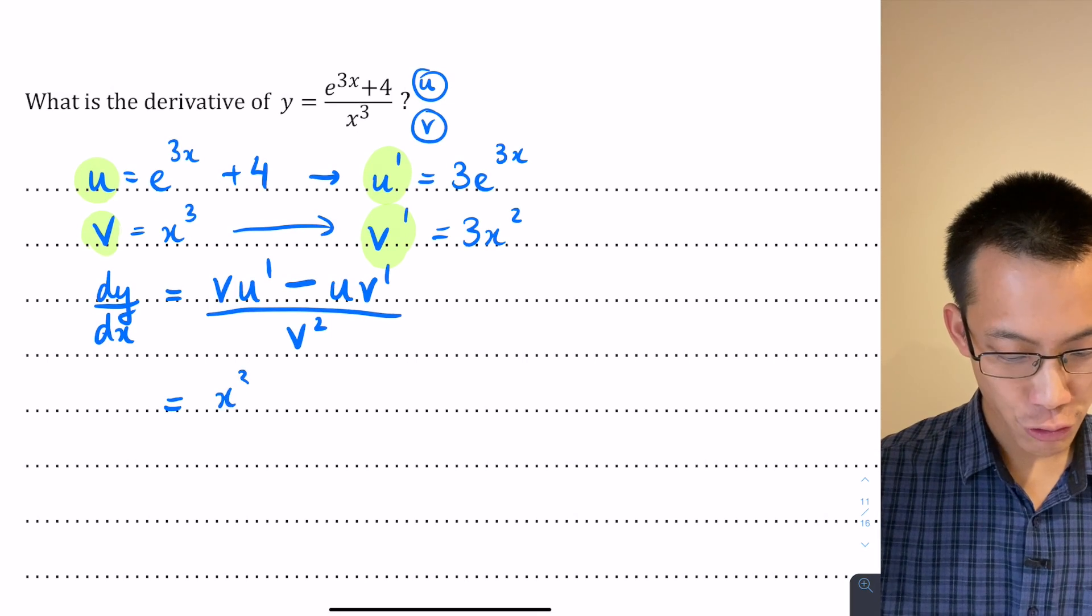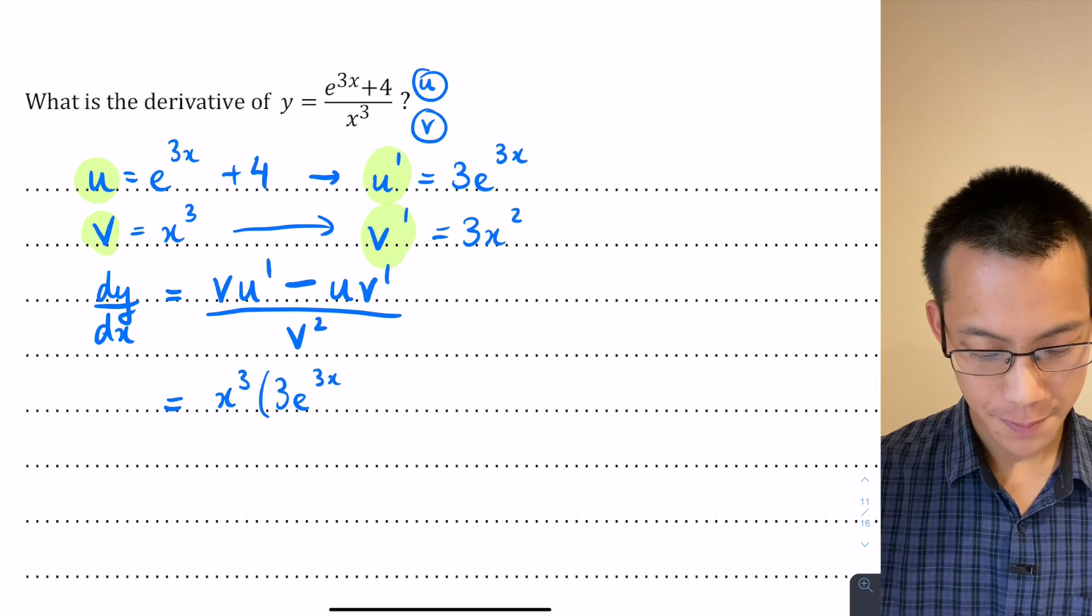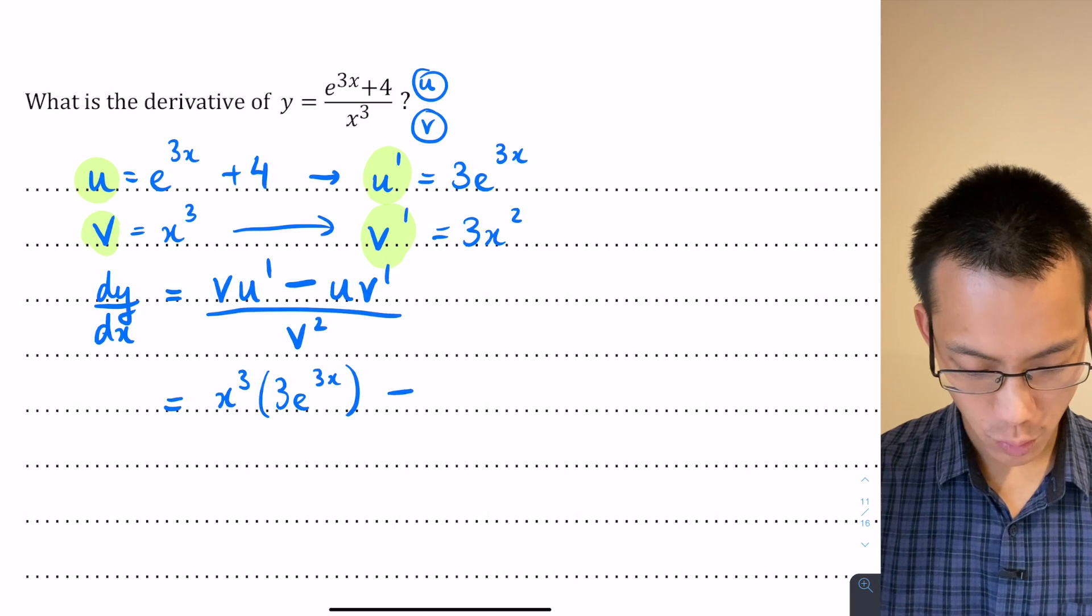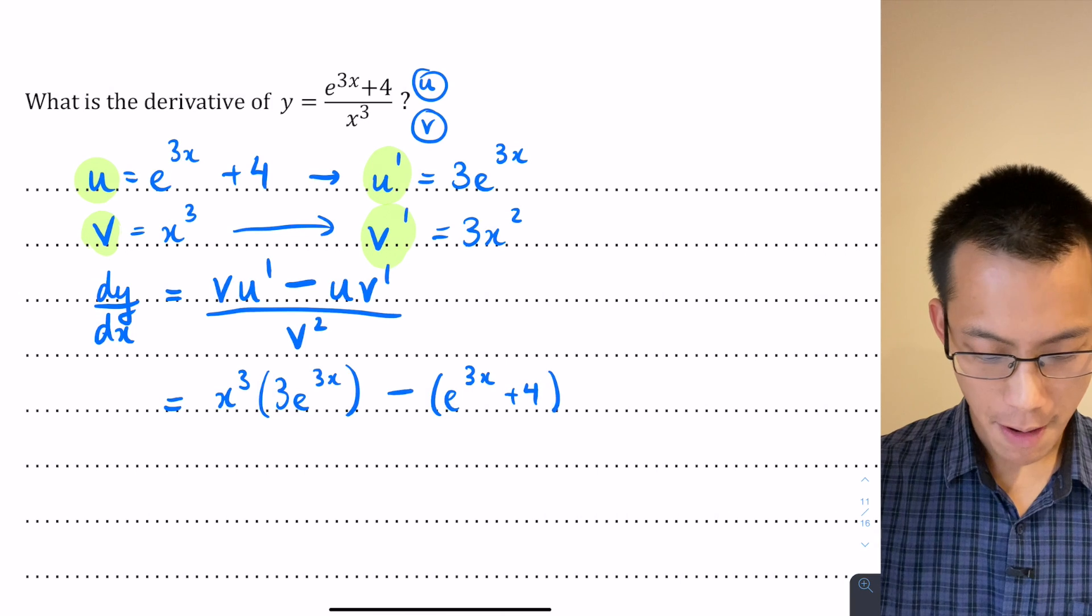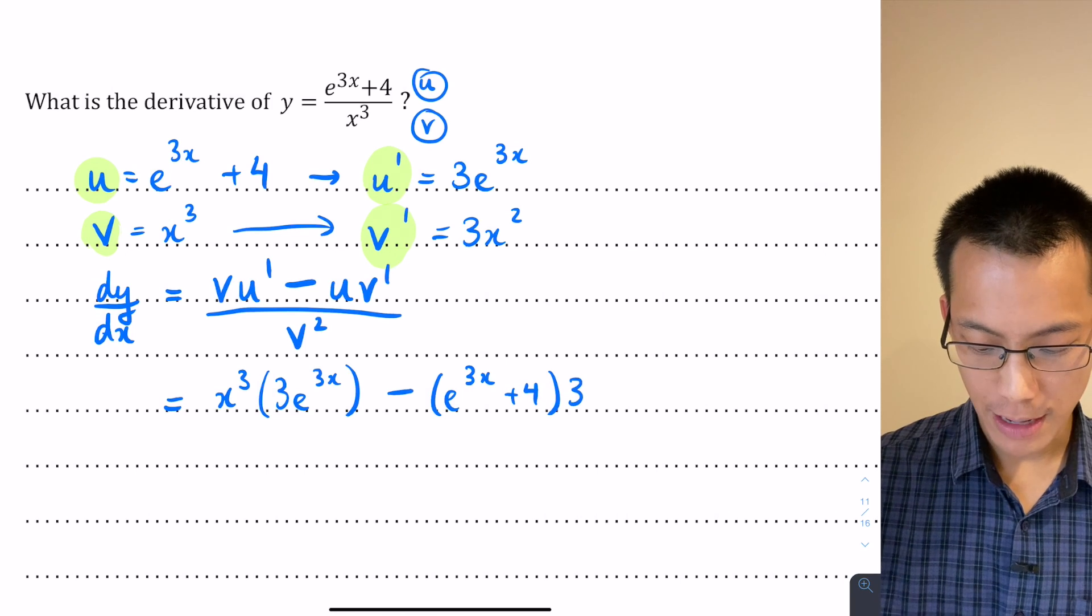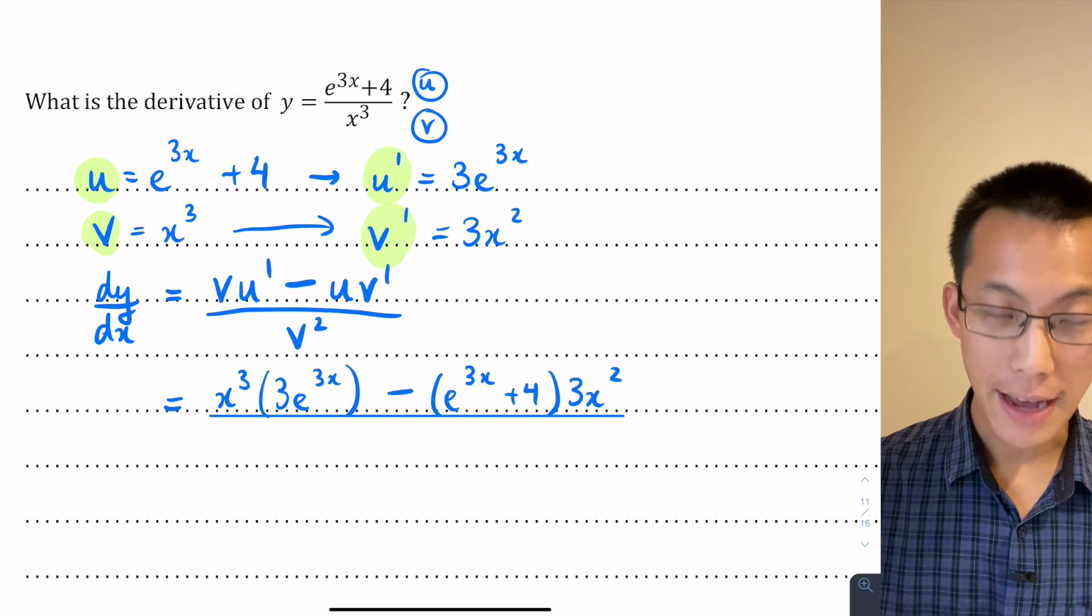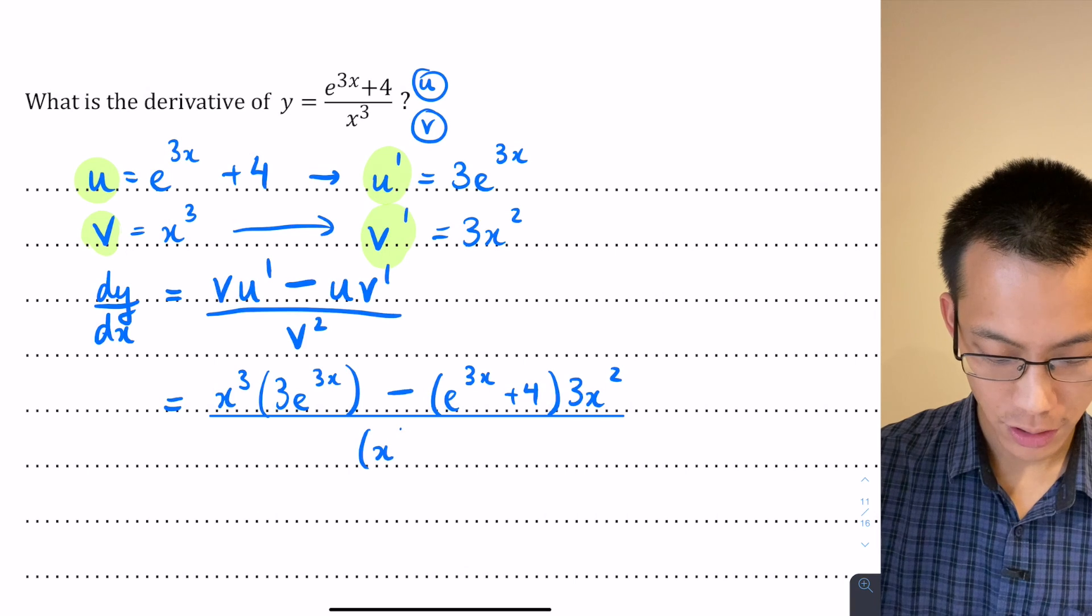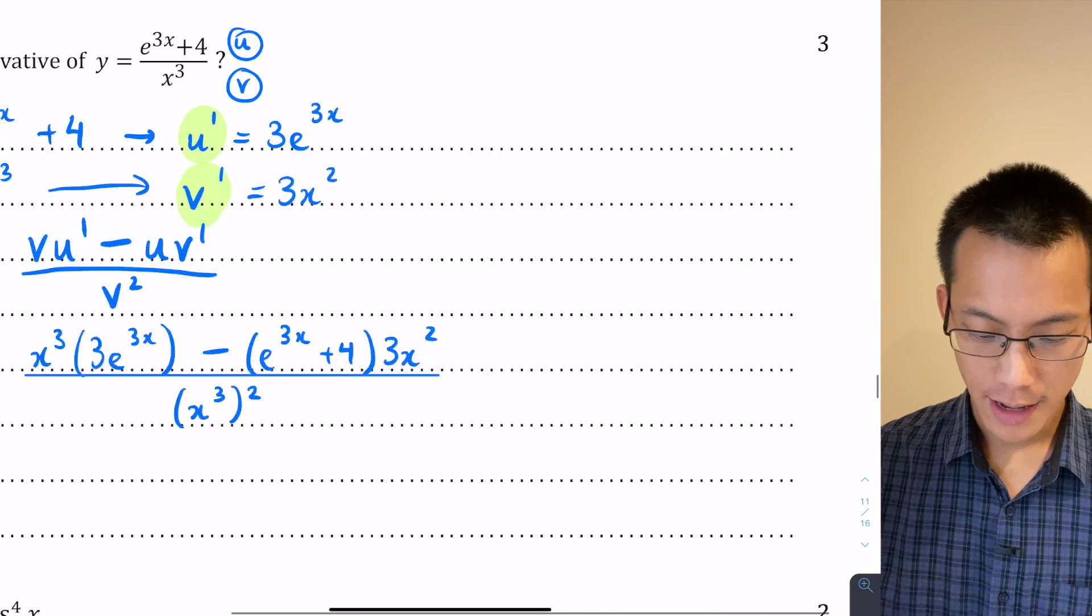So let's have a go. v is x cubed, u dash is going to be 3e to the 3x. Take away u, which I think we said was e to the 3x plus 4 multiplied by v dash, which is 3x squared. All of that is divided by v squared. Since v is x cubed, I'm going to write that as x cubed squared. We'll come back to that in a second. I need some more space, so I'm going to sneak over here on the right hand side.